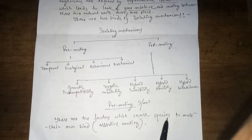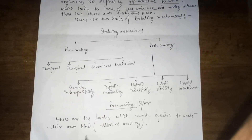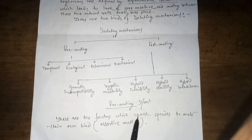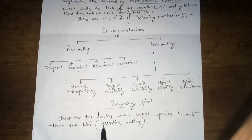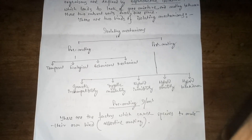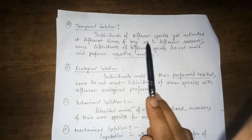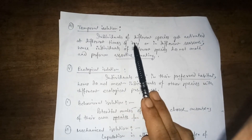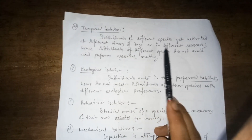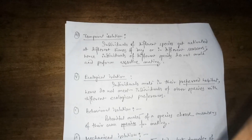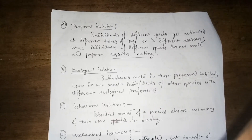Pre-mating mechanisms are the factors which cause species to mate with their own kind, which is also called assortative mating. Firstly, temporal isolation: individuals of different species get activated at different times of the day or in different seasons, hence they do not mate and instead perform assortative mating.